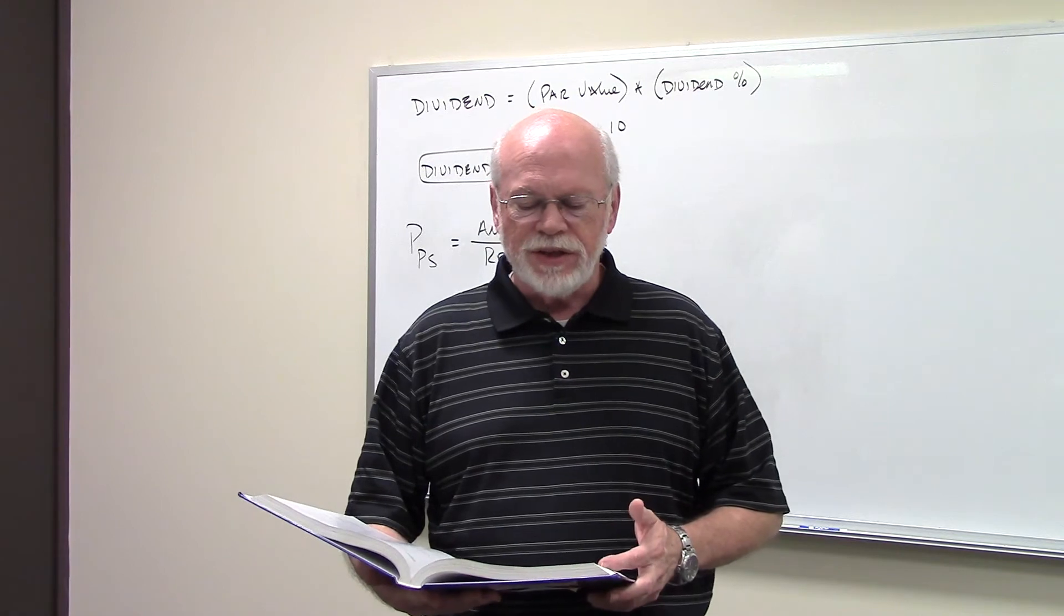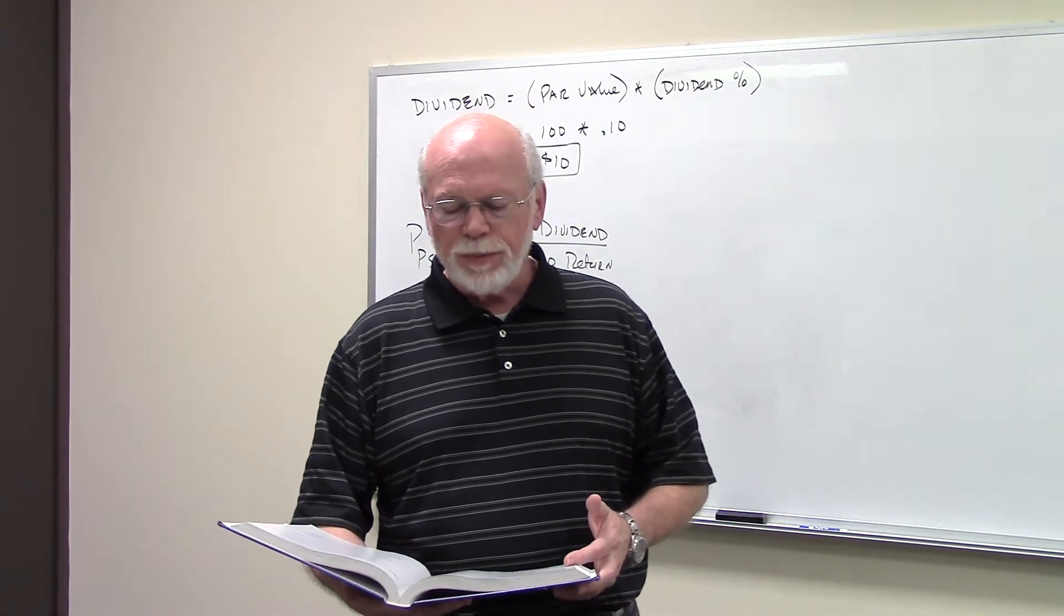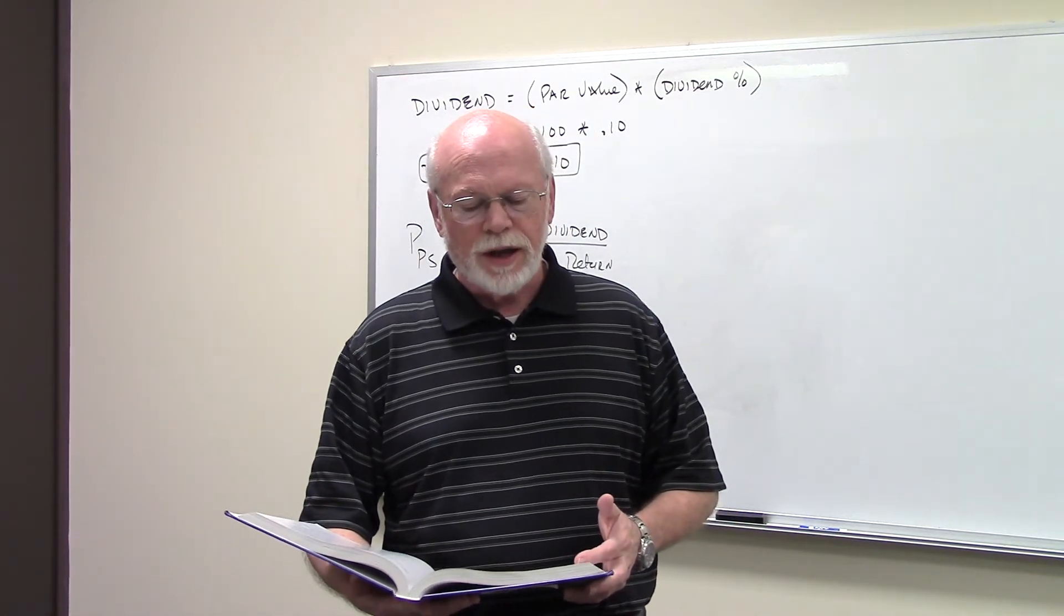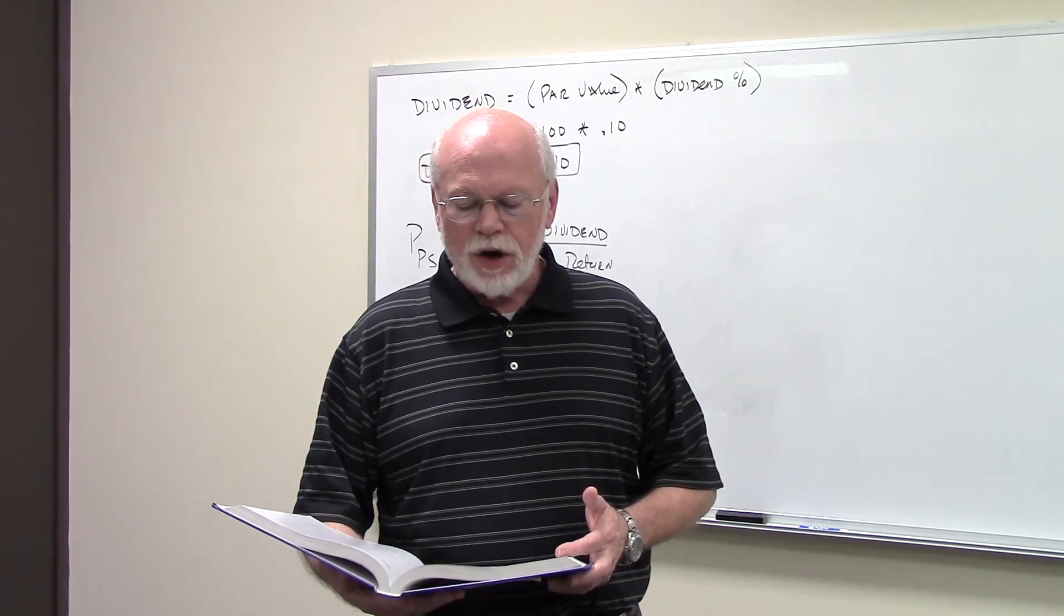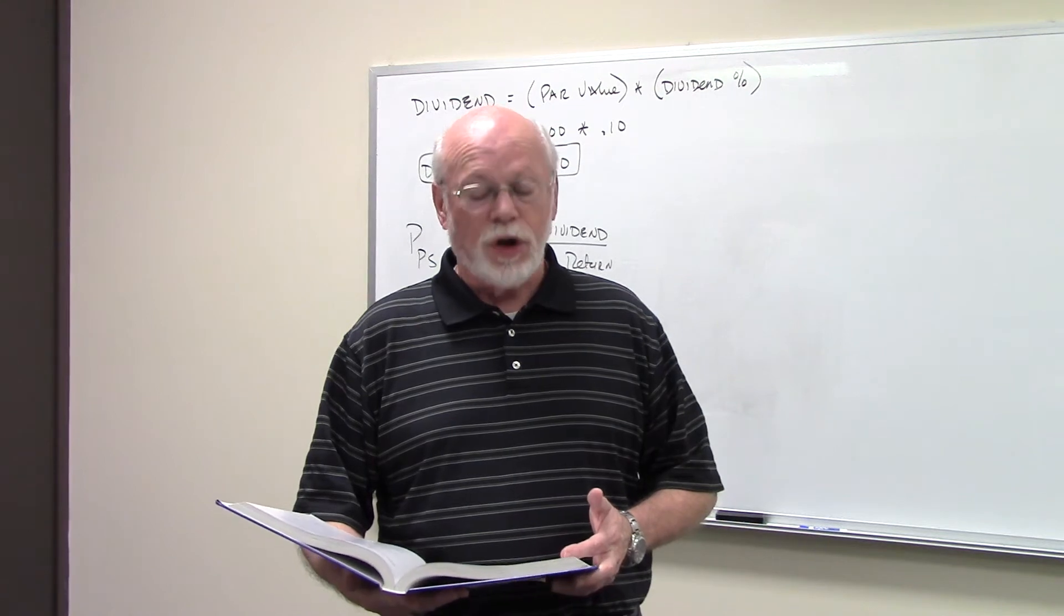This problem reads like this. It says the Zelle Corporation issued perpetual preferred stock with a 10% annual dividend. The stock currently yields 8% and its par value is $100.